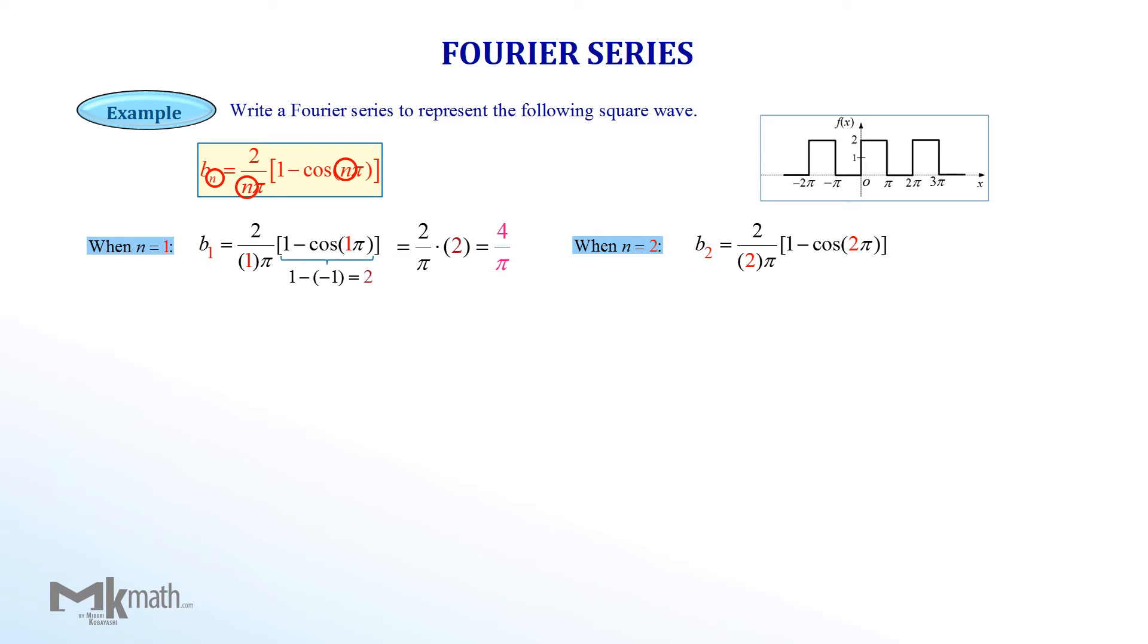When n equal 2, substituting 2 into n to get 0. When n equal 3, substituting 3 into n and evaluating cosine 3 pi to get 4 over 3 pi. n equal 4, substituting n equal 4. Note that b would be 0 for all even values of n.